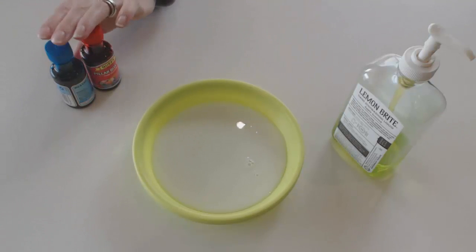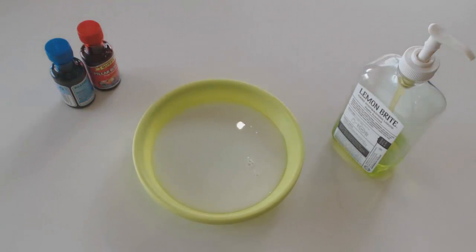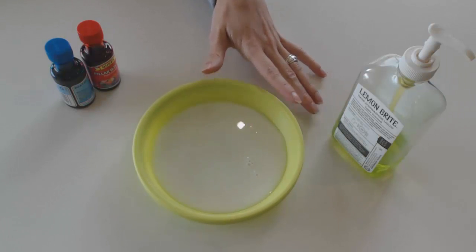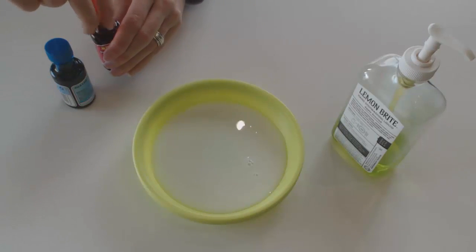coloring - you can use as many colors as you like - and some dishwashing liquid. What you will do is pour the milk inside your shallow bowl and then add the food coloring. Be sure that when you